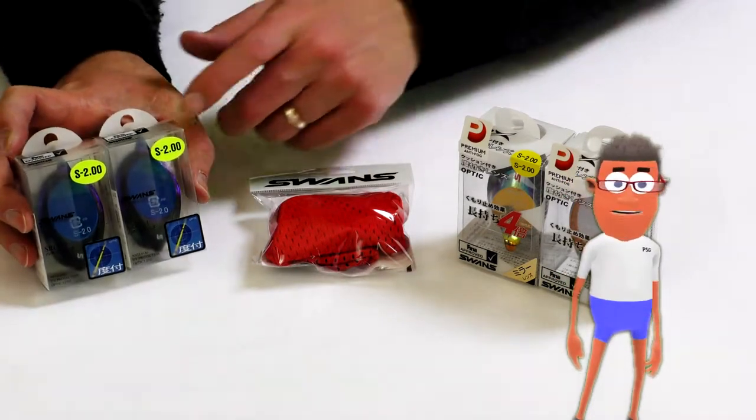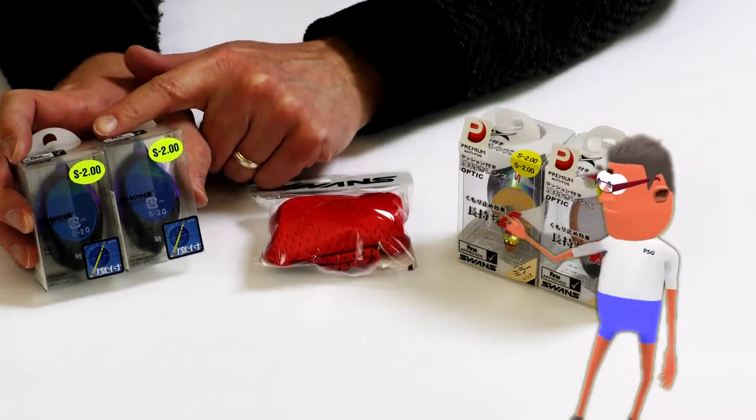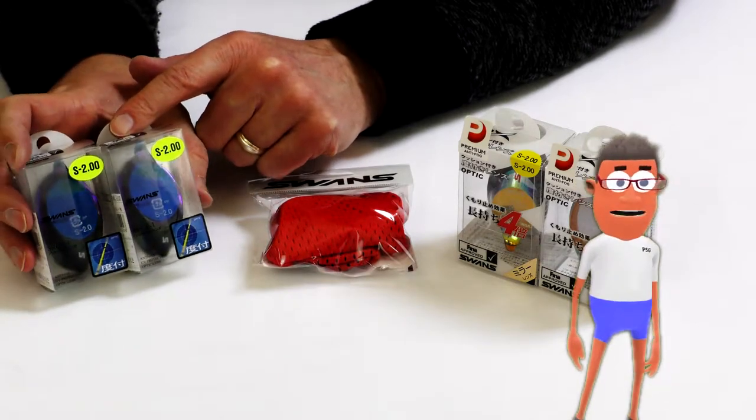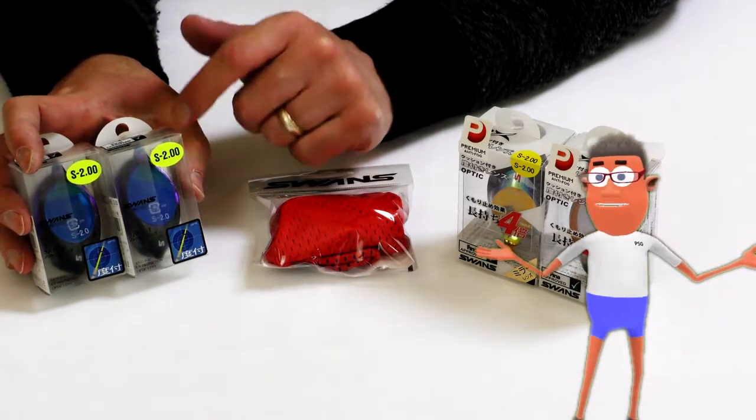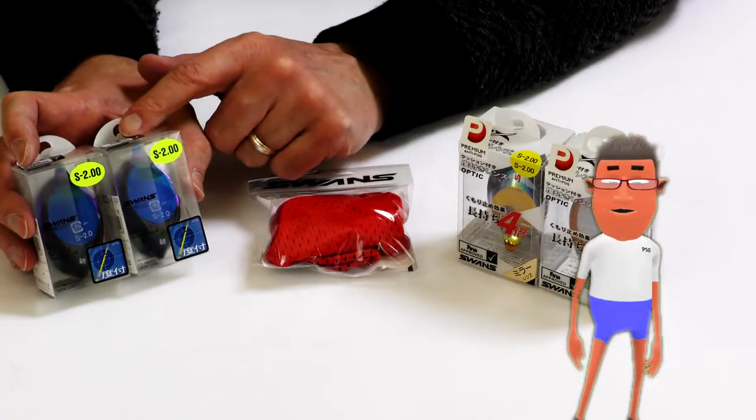The SR1M has a blue mirrored finish lens and these are what are called the Swedish style fits. They have no eye seal around the edge of the lens. I'll show you all that in a bit more detail.